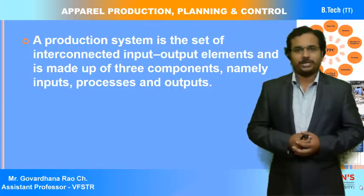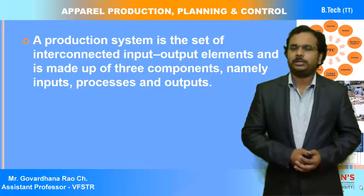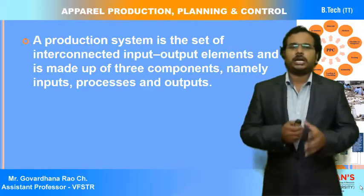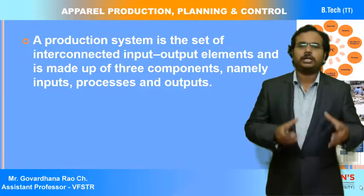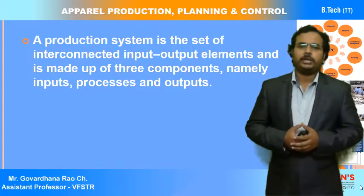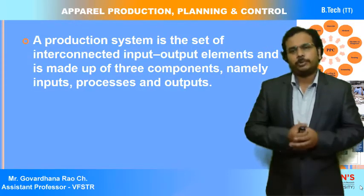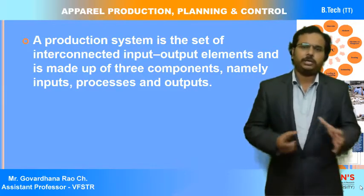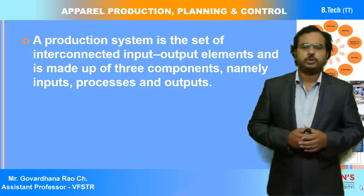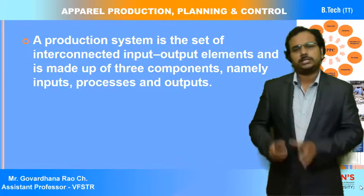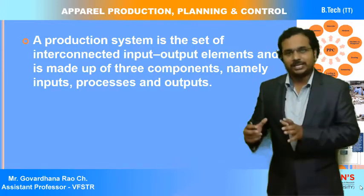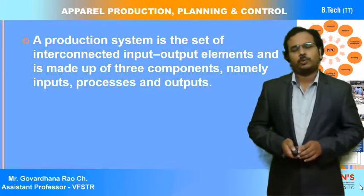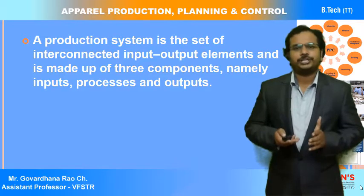The production system is a set of interconnected input-to-output elements made up of three components: inputs, processes, and outputs — all three together form the production system. The production system is also a part of a larger system — the business firm and organization.